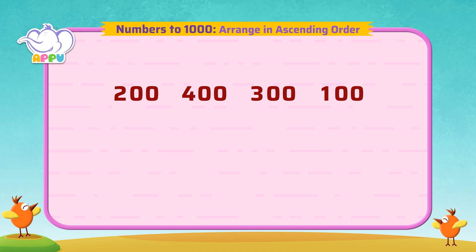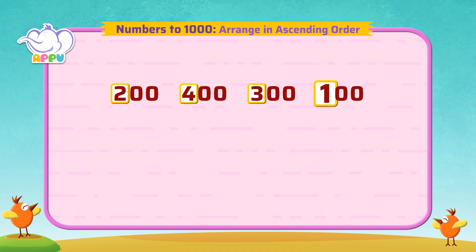To arrange in ascending order, we first compare the hundreds place. In the hundreds place, we have 2, 4, 3, and 1.